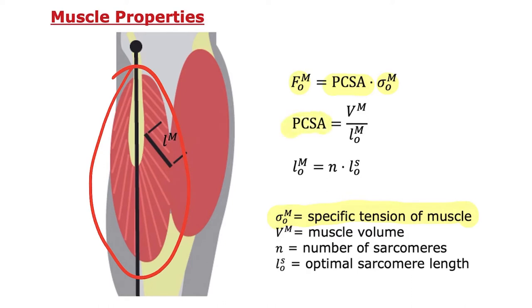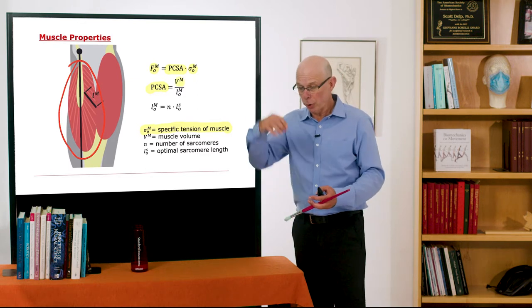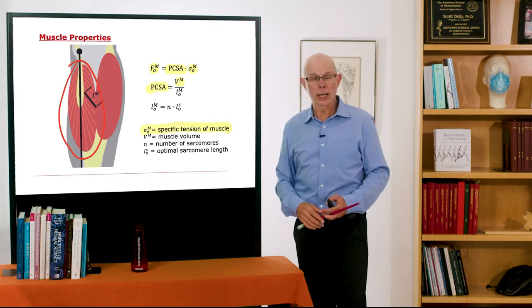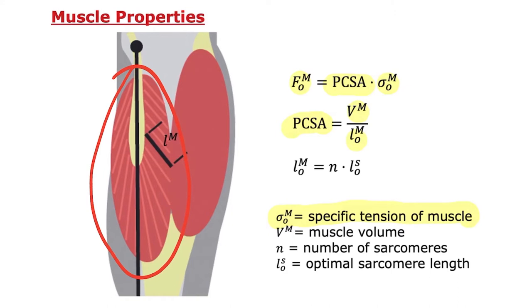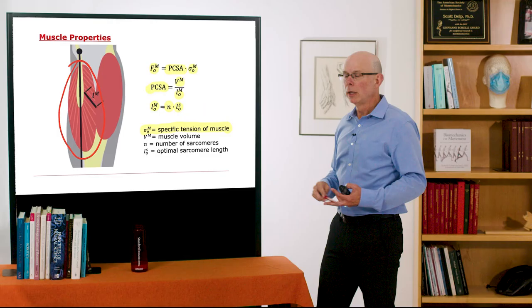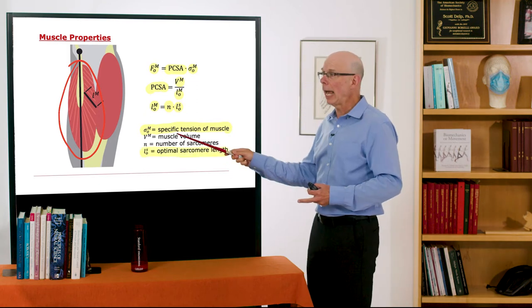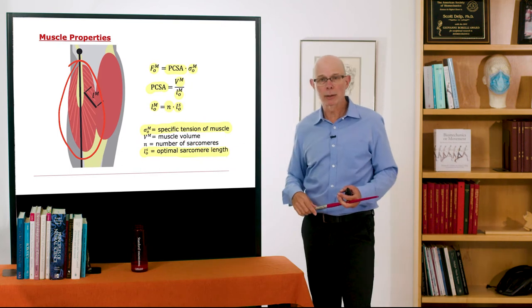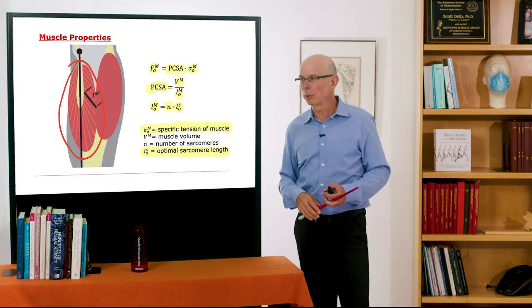To find the physiologic cross-sectional area, we measure the volume of the muscle — by measuring its mass or by placing the muscle in a graduated cylinder of water — then divide that volume by the optimal muscle fiber length. The optimal muscle fiber length equals the number of sarcomeres times the optimal sarcomere length. One option is to count sarcomeres: the optimal sarcomere length in humans and most animals is around 2.7 microns. But counting sarcomeres is impractical, so there's a simpler approach.